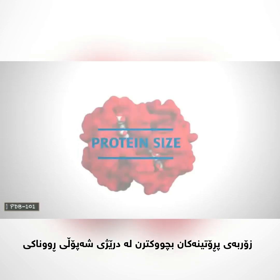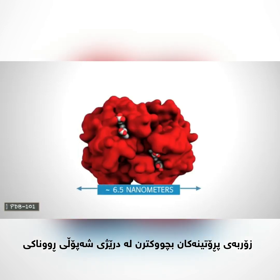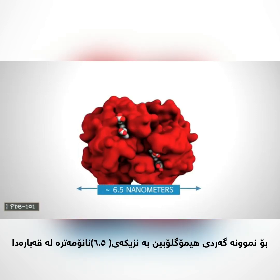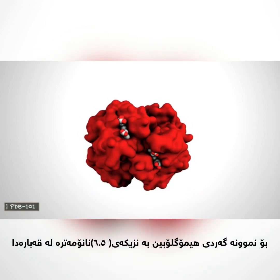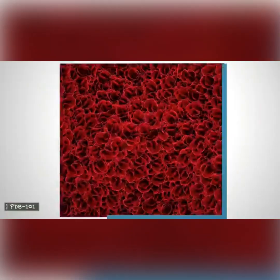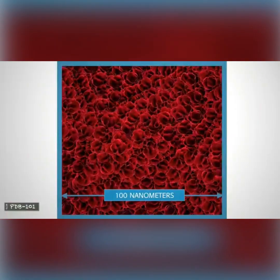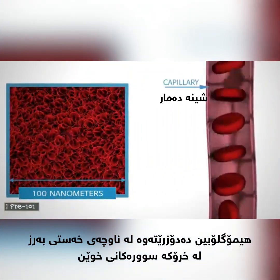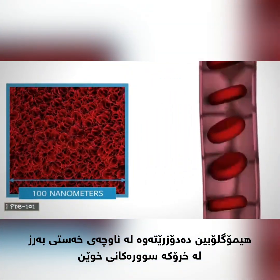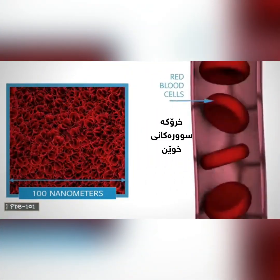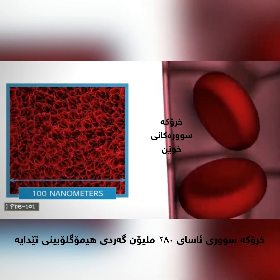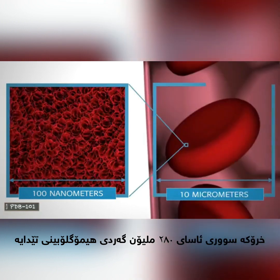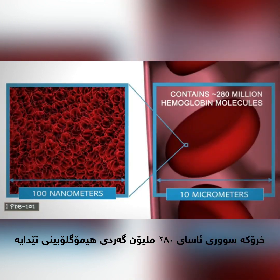Most proteins are smaller than the wavelength of light. For example, the hemoglobin molecule is about 6.5 nanometers in size. Hemoglobin is found in high concentration in red blood cells. A typical red blood cell contains about 280 million hemoglobin molecules.